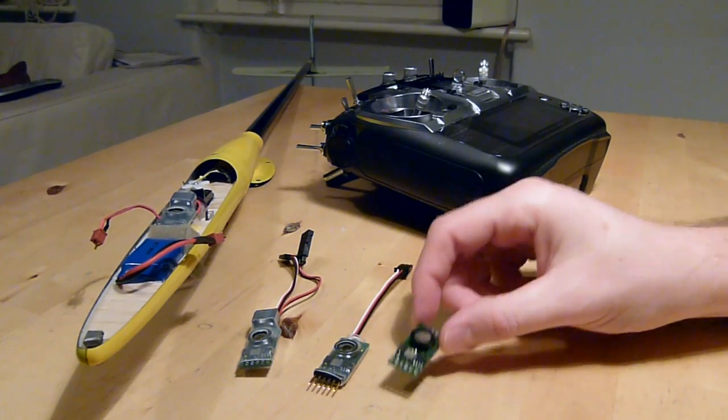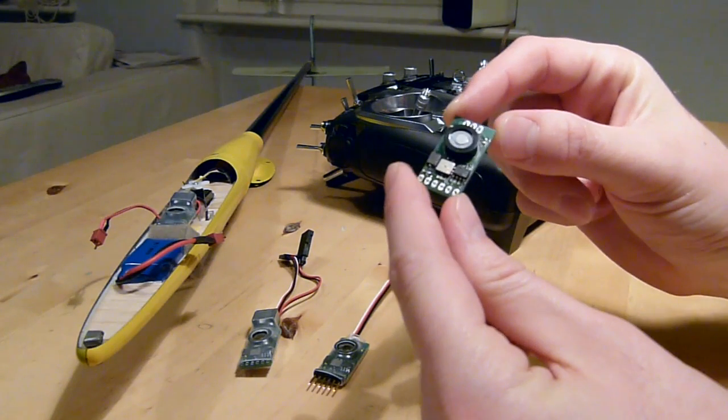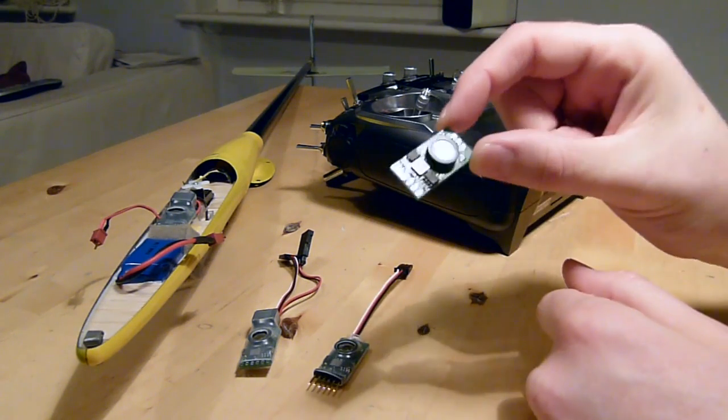So I want to give you a quick look at the open altimeter. This is the board. It's small, about 31mm by 16mm, and it's light, it weighs about 3.1 grams without any wires.